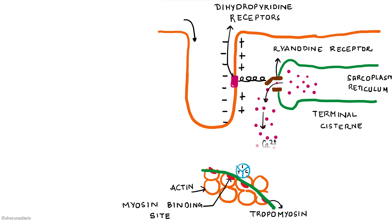The released calcium binds to troponin C, which was present on the tropomyosin that was hiding all the myosin binding sites. Once calcium binds to troponin C, the tropomyosin changes its conformation so that all the myosin binding sites are uncovered and muscle contraction can take place.